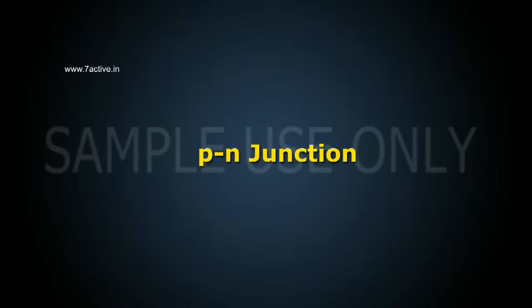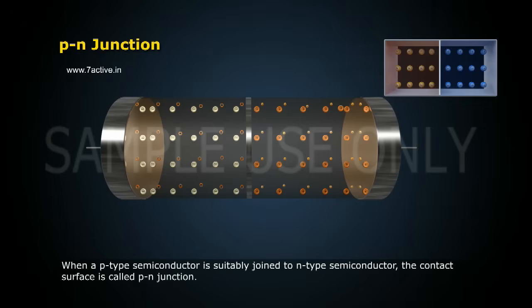When a P-type semiconductor is suitably joined to an N-type semiconductor, the contact surface is called a P-N junction.